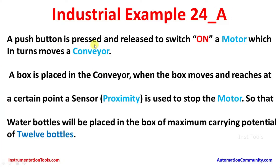A push button is pressed and released to switch on a motor which in turn moves the conveyor. A box is placed on the conveyor, and when the box moves and reaches a certain point, a proximity sensor is used to stop the motor so that water bottles will be placed inside the box at a maximum capacity of 12 bottles.